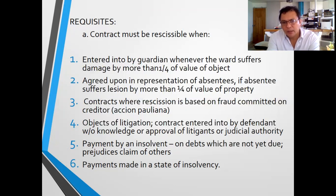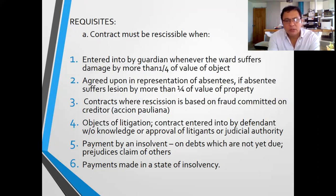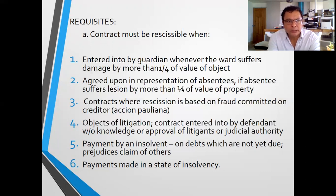Number four: objects of litigation — contracts entered into by a defendant without the knowledge or approval of the litigants or judicial authority. So there is a case, and the object of the case is a property — a real property. Without approval of the other party in the case or the judge, the holder of the title of the property sold it to another person who is a non-litigant. Then that sale is rescissible.